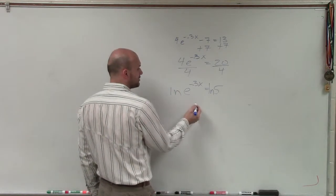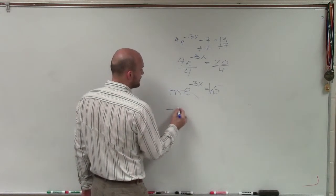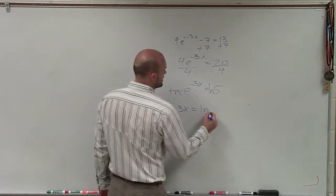Therefore, by taking the log of both sides, now I have negative 0.3x equals ln of 5.